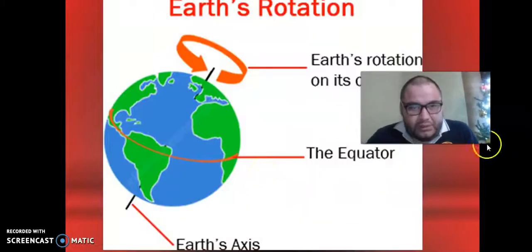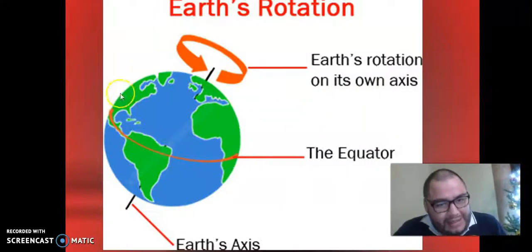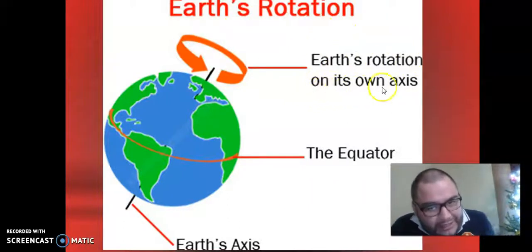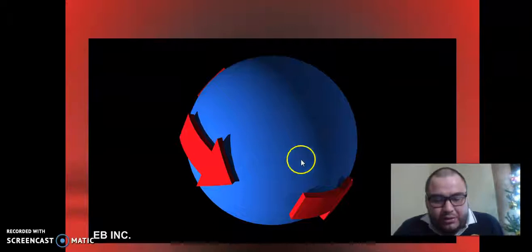Earth rotation. Here is that example. The equator is the waist of the planet. Earth rotation on its own axis. This is our example of Earth rotation. This is the topic of today, so it's super easy.